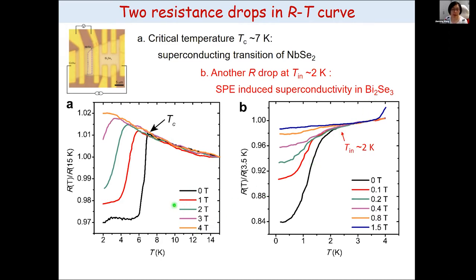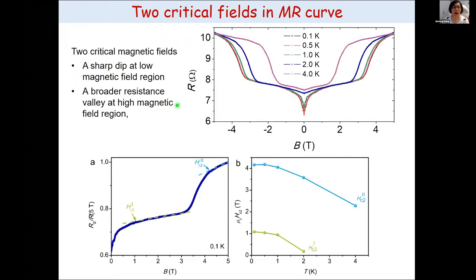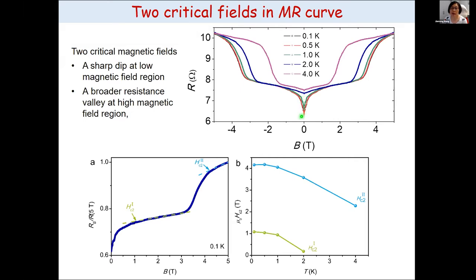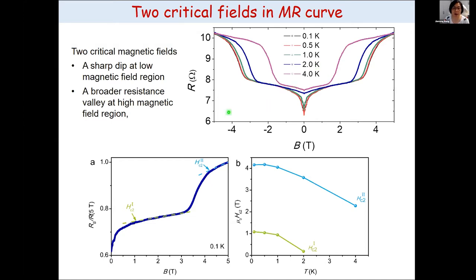By applying a magnetic field we can see this transition temperature shifts to lower temperature. If we look at the magnetoresistance dependence with an in-plane field applied, we can also see two features: at lower temperature there is a sharp dip around zero tesla, and we can also see another valley at a larger magnetic field range. Basically we can determine two critical magnetic fields corresponding to the two transition temperatures.